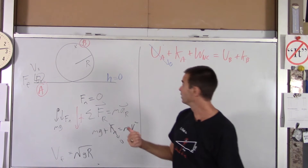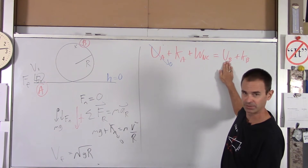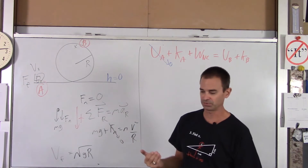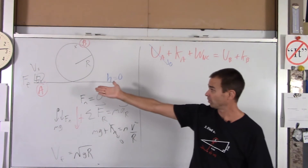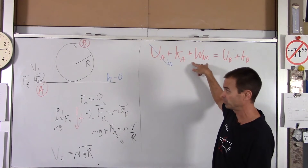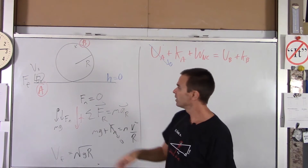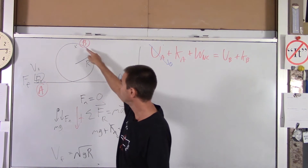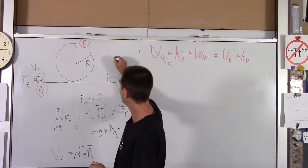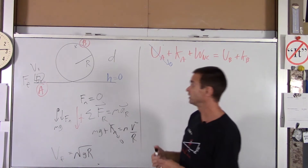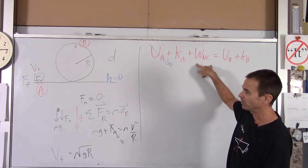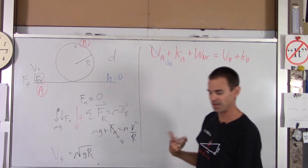There are three forces total acting on the roller coaster. Gravity ends up in the potential energy term. The normal force is always perpendicular to the motion of the roller coaster, so it does no work. The frictional force does work: W_friction = −F_friction × distance. We also have two more givens: the radius R, and the total path distance from point A to point B, which we'll call D. The work by friction is negative because friction acts backward on the coaster.